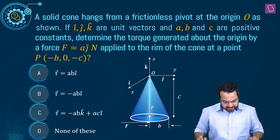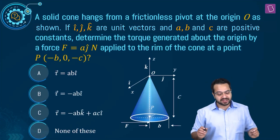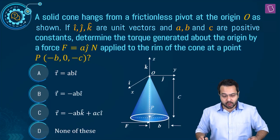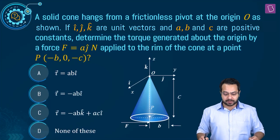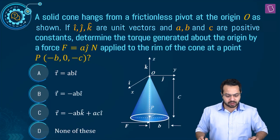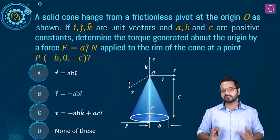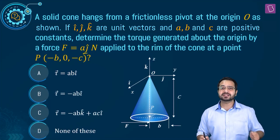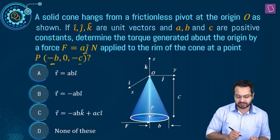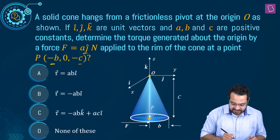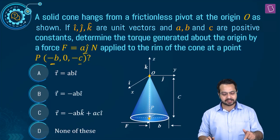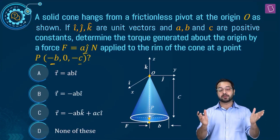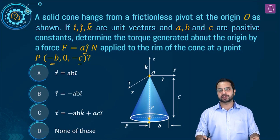Next question: a solid cone hangs from a frictionless pivot at origin O. If i, j, k are unit vectors and A and B are positive constants, determine the torque about the origin due to a force F equal to A j Newton applied to the rim of the cone at point P with coordinates (minus B, 0, minus C). The force acts in the j direction. The point is C distance down in the negative Z direction and B distance in the negative X direction — that is where B is the radius of the cone.